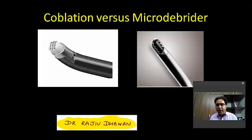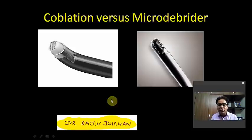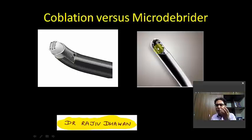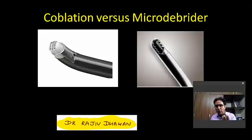One thing I would like you to know — there is another similar kind of instrument now available in ENT called the microdebrider. Look at the two tips: this one is coblation and this is the microdebrider. Can you see the cutter? Microdebrider is a cutter with suction — it swivels, cuts the tissue, and sucks the cut tissue also. Do not confuse the coblation with the microdebrider; the microdebrider will have a cutter-like tip.